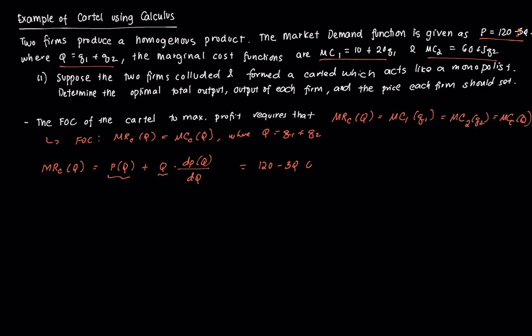We can compute for that easily. Our demand function is 120 minus 3Q. And we have here this form here, which is plus Q times dP over dQ. That's negative 3. Which should be equal to 120 minus, this is going to be negative 3Q plus negative 3, that's 6Q. So this is your marginal revenue of the cartel.